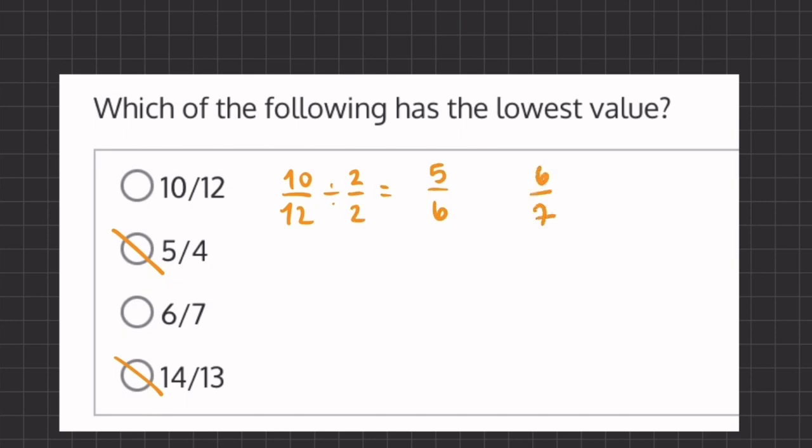Now let's compare this 5 over 6 with 6 over 7. And if we take a look at these two fractions, both fractions are smaller than 1, and their numerators both have an equal distance from their denominators.